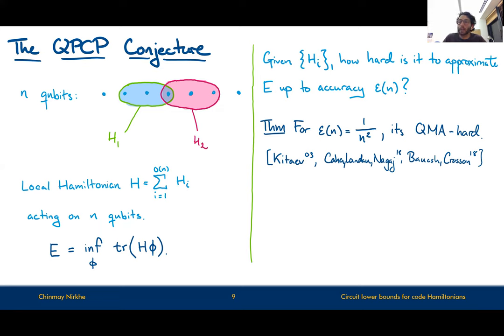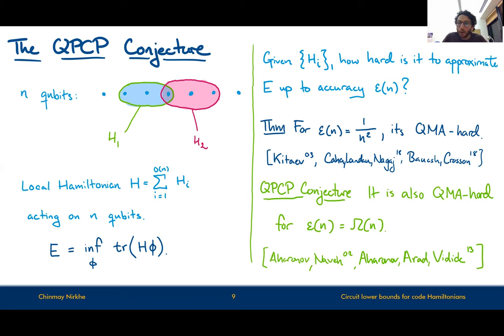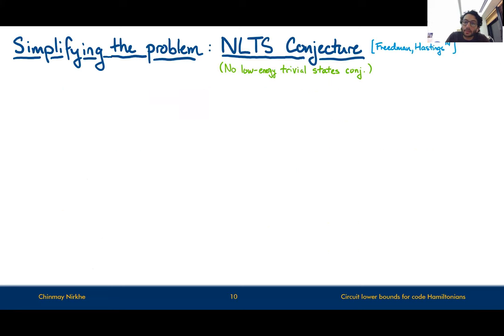The quantum PCP conjecture has been around for almost 20 years and in some ways we are no closer to solving it now than when we started — it is a problem that eludes and excites the community. There was a simplification called the NLTS conjecture — the no low energy trivial states conjecture — which tried to capture a very simple property of the quantum PCP conjecture. Even this conjecture has been open for almost a decade.